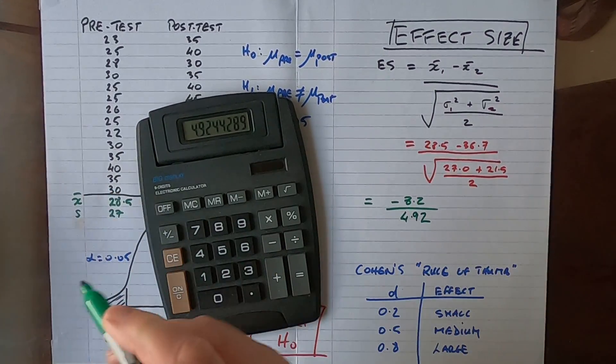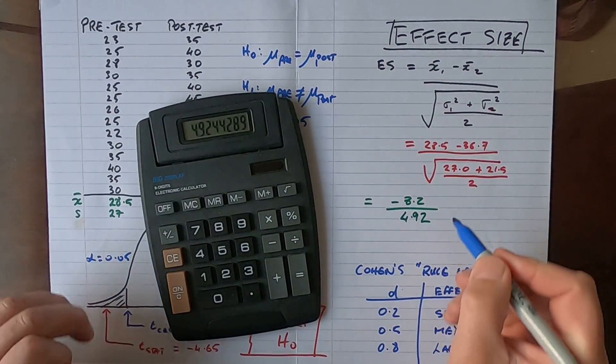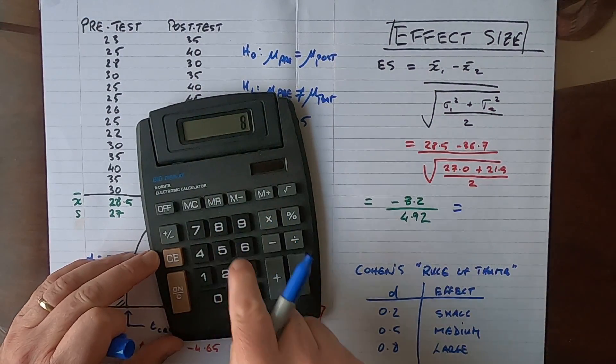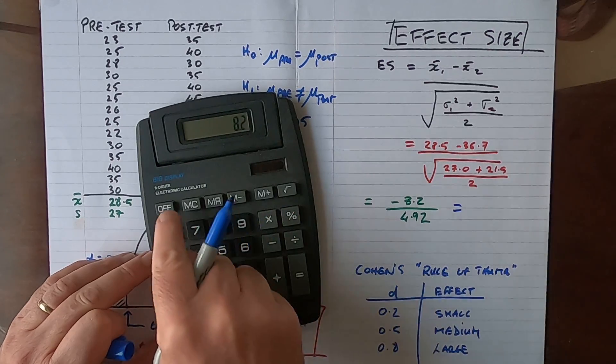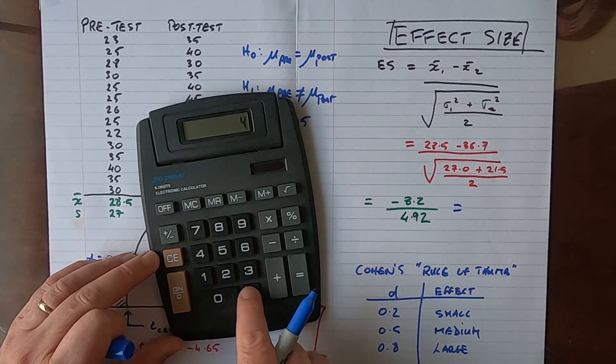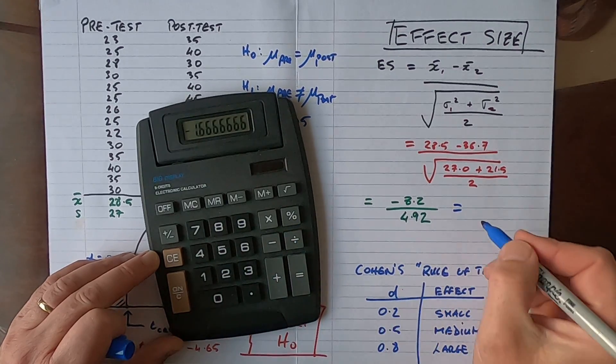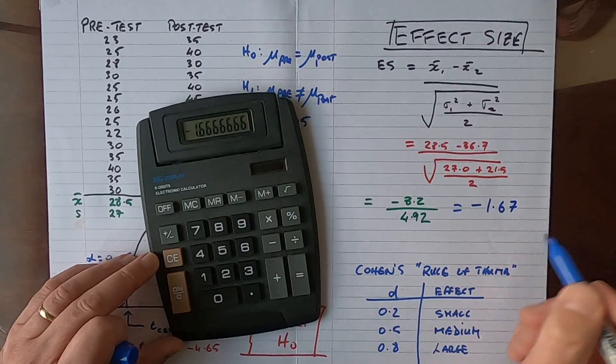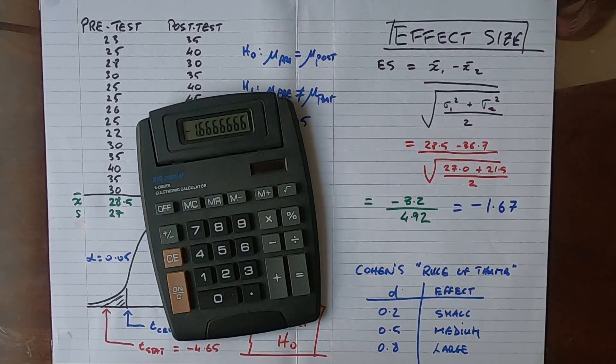When I work that out finally, let me use a different color here. I want to get 8.2 and change that to a minus, divided by 4.92, equals minus 1.6 recurring. So I'll do that to two decimal places: minus 1.67.